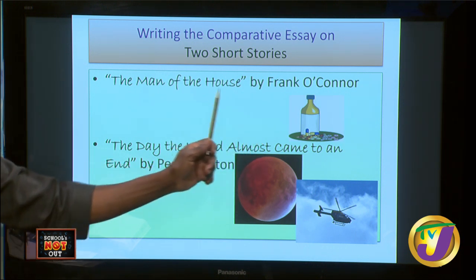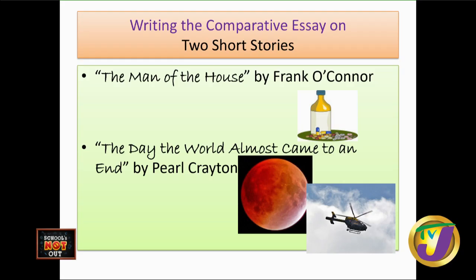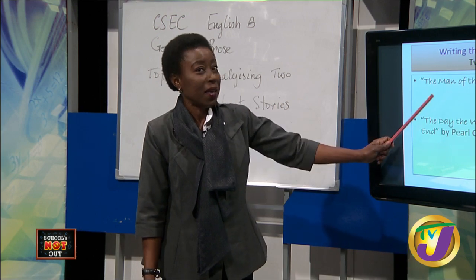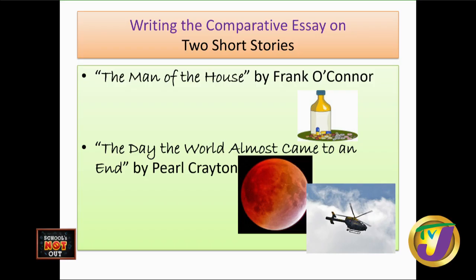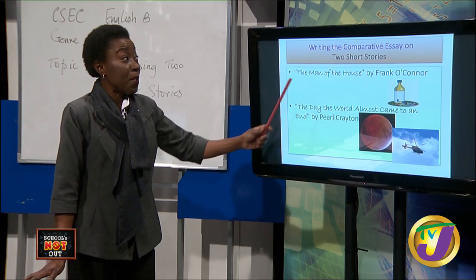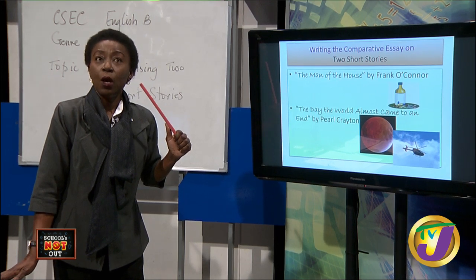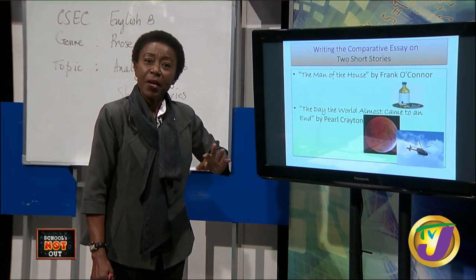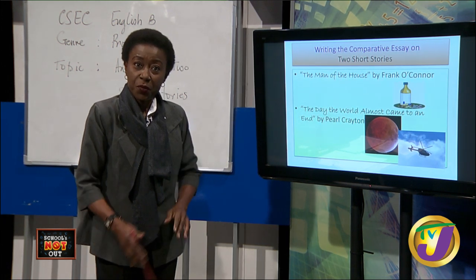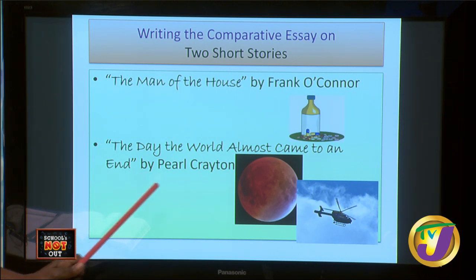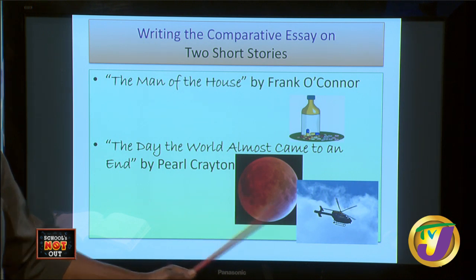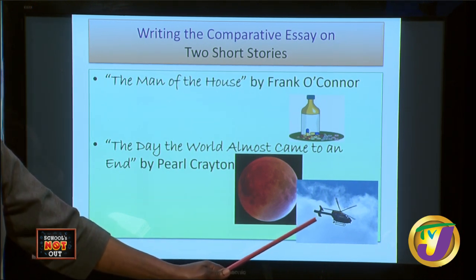When you say the man of the house, and the man is a little boy, what comes to mind? You're looking at authority and responsibility. So the man of the house being a little boy, we can begin to think of some irony. In The Day the World Almost Came to an End by Pearl Creighton, we will read about an eclipse and a very frightening event one night that has something to do with a helicopter.